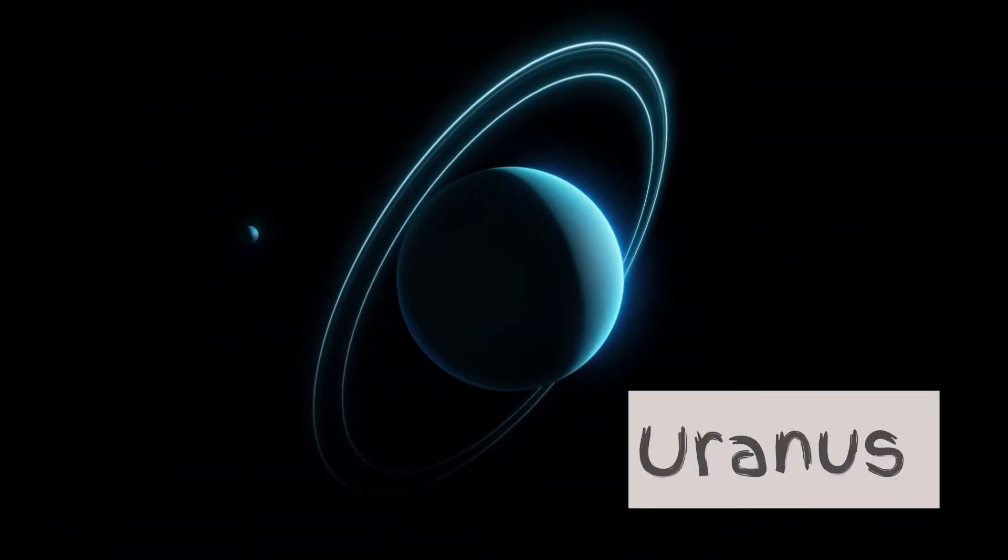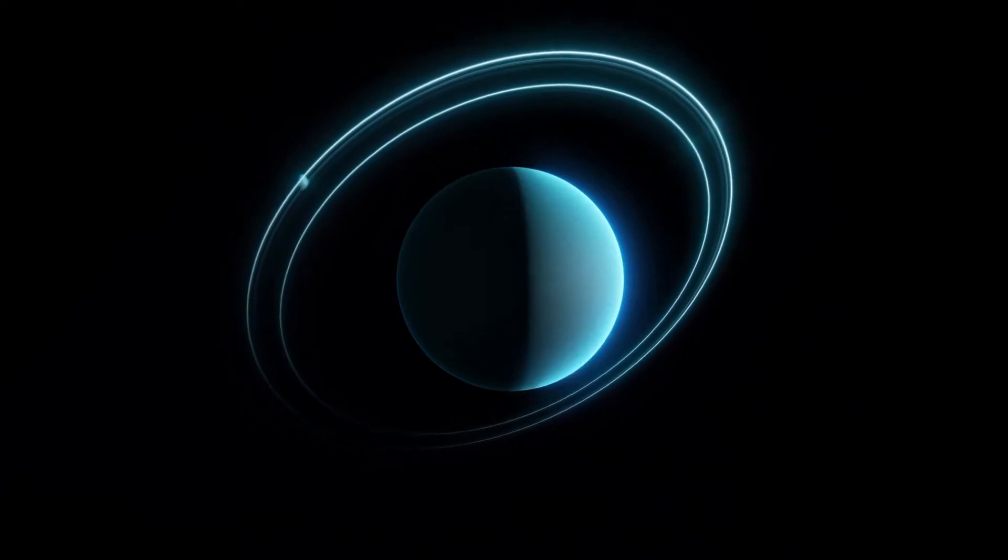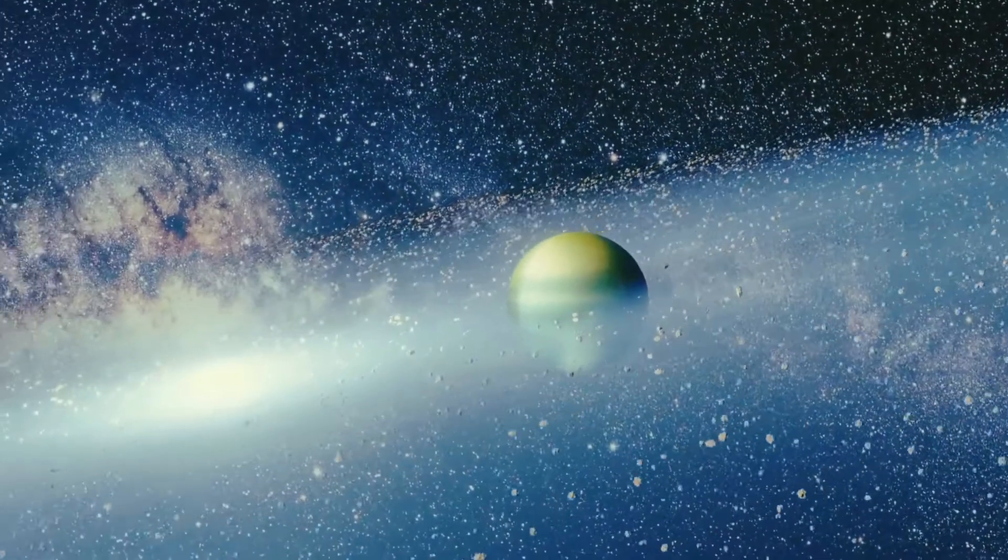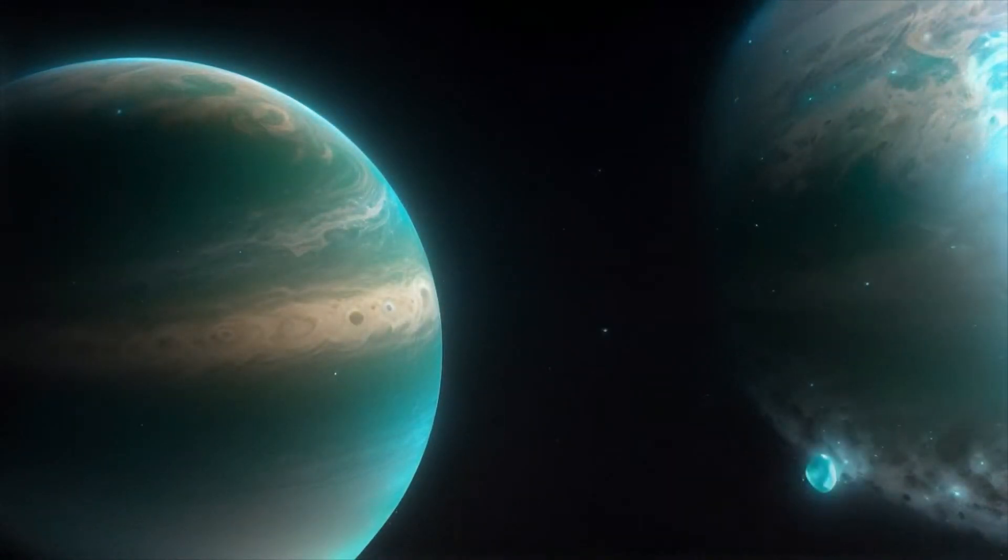Uranus, the sideways planet, a real oddball, tilted on its side, it dances with gall. Its atmosphere is icy with a blue-green hue, and it's the coldest planet, freezing through and through.